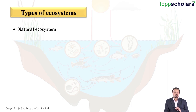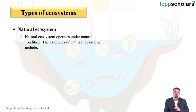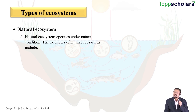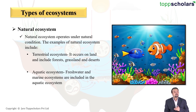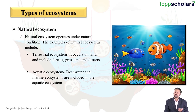Moving on, let us now see the various types of ecosystems. Firstly, we have the natural ecosystem. As the name suggests, these are ecosystems which are naturally formed and operate under natural conditions with little or no interference of human beings. Examples include terrestrial ecosystems like desert, grassland, or forest.